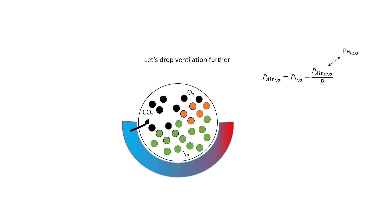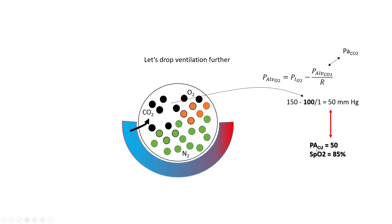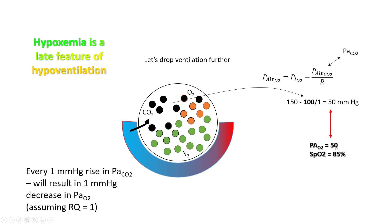If you drop ventilation further, your alveolar CO2 will continue to increase, subsequently dropping your PaO2. So hypoxemia is a relatively late feature of hypoventilation — your CO2 levels have to be very high before you see the hypoxia. For every 1 mmHg rise in PaCO2, you will see a 1 mmHg drop in PaO2 if your respiratory quotient is 1. We will talk about respiratory quotient in one of the lectures.